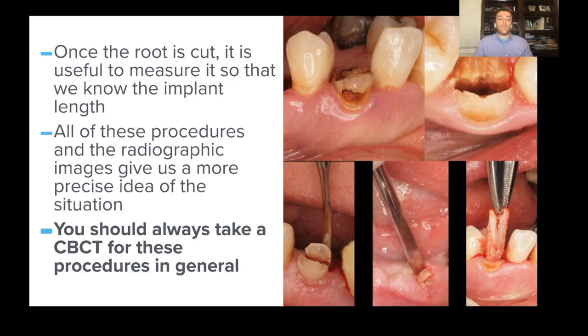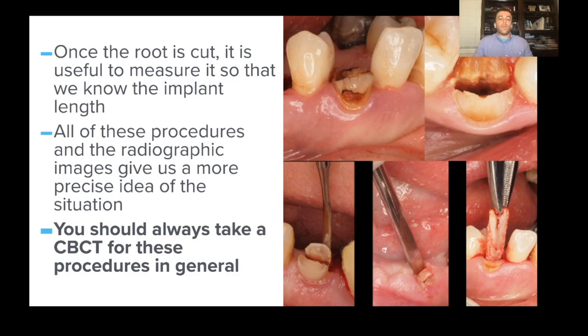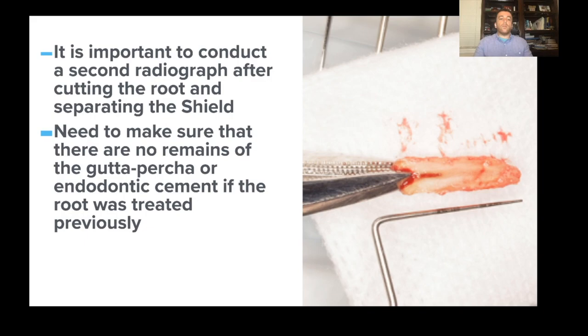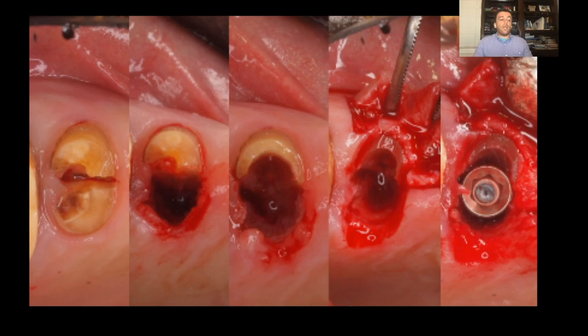If you notice any shield movement or loosening, the socket shield procedure should be aborted — go back to regular extraction and placement of your implant, filling the gap or performing GBR if necessary. Once the root is cut, measure so that the implant length corresponds to what the root shape looks like. You should have taken CBCT ahead of time, but it helps to have these extra figures by analyzing the root length removed from the palatal aspect. Conduct a second radiograph after cutting the root and separating the shield, to ensure removal of all remnants of gutta percha or endodontic cement if the root was previously treated.